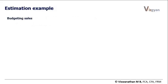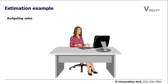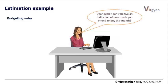Estimation involves identifying the value of an unknown variable using samples, surveys, and/or triangulations. To give you an example, let us say a company is budgeting its sales for the next month and has asked its sales manager to provide the data. The sales manager can call up dealers to get an idea of the quantity they intend to purchase. If the company has too many dealers, she can call some key dealers to get a sense of the broad trend and use that to quantify expected sales. What the sales manager is doing here is estimation.